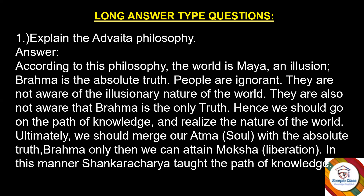Important question: Explain the Advaita philosophy. Answer: According to this philosophy, the world is Maya — an illusion. Brahma is the absolute truth. People are ignorant; they are not aware of the illusionary nature of the world, nor that Brahma is the only truth. Hence we should go on the path of knowledge and realize the nature of the world. Ultimately, we should merge our Atma with the absolute truth, Brahma — only then can we attain Moksha, that is liberation. In this manner, Shankaracharya taught the path of knowledge.